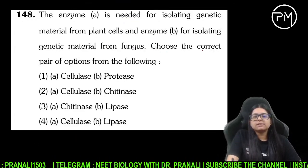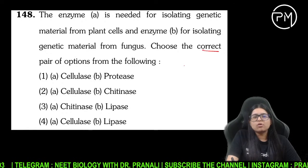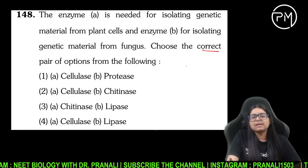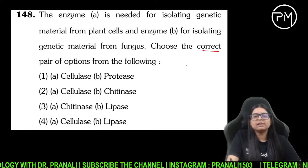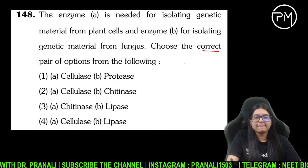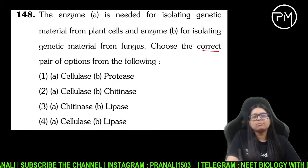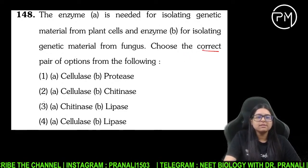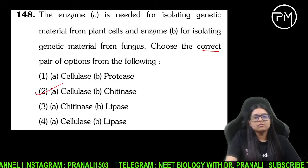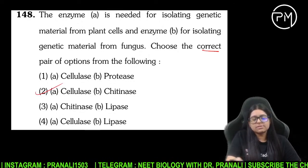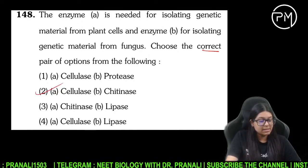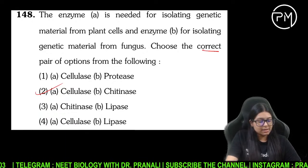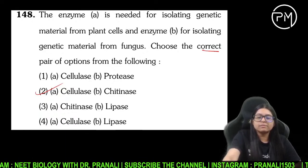Correct pair batayiye — kaun sa enzyme chahiye plant cell mein se DNA nikalne ke liye aur fungus mein se nikalne ke liye? Plant ki cell wall cellulose ki bani hai toh cellulase se hatao. Fungus ki cell wall chitin ki bani hai toh chitinase se. Toh answer kya ho jayega — 2.